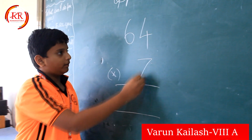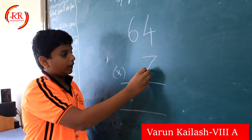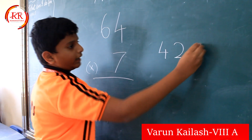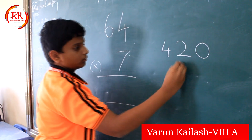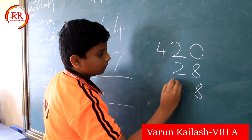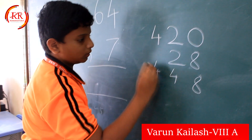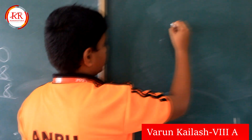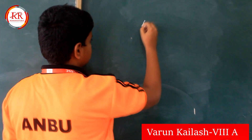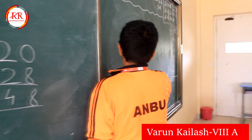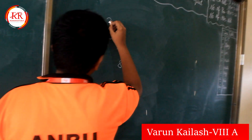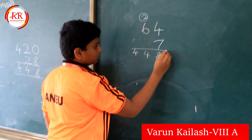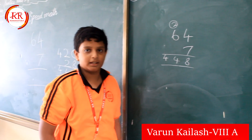Normally we will multiply 7 and 4. Now we should multiply 7 and 6, then add a 0 here. Then we should add this. Now we can check with the normal method. The answer is matching. Thank you.